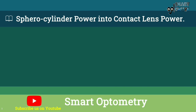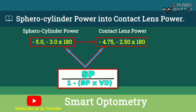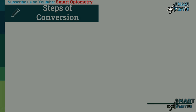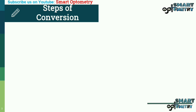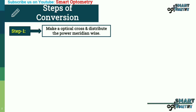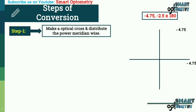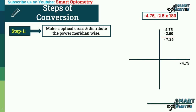Today I will discuss how to convert sphero-cylinder power into contact lens power. The steps of conversion are: Step 1 — make an optical cross and distribute the power meridian-wise.